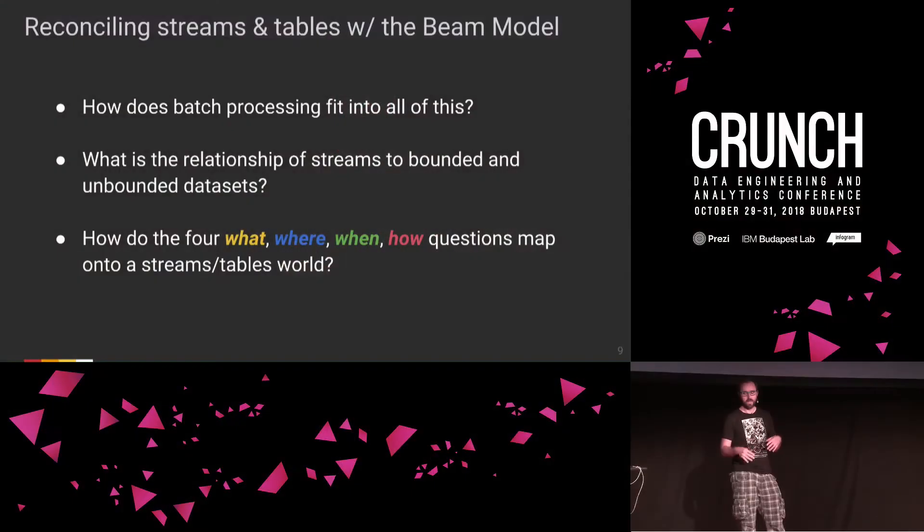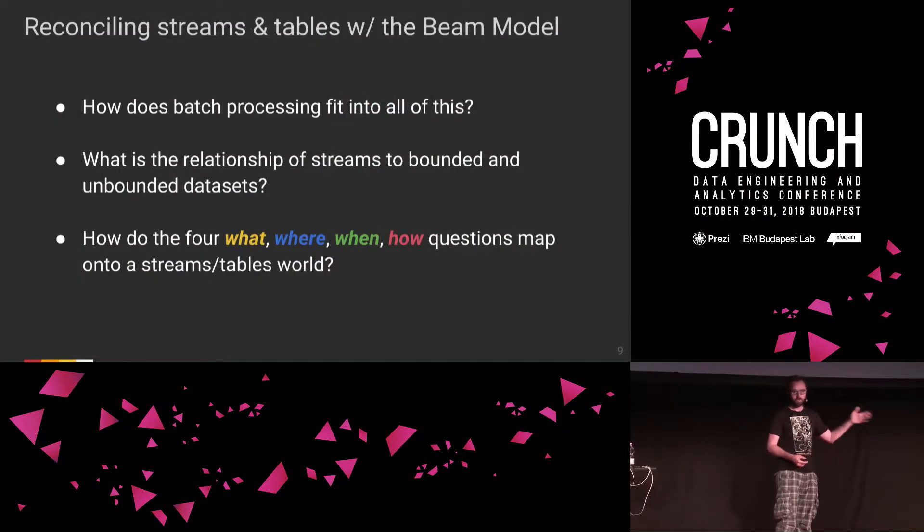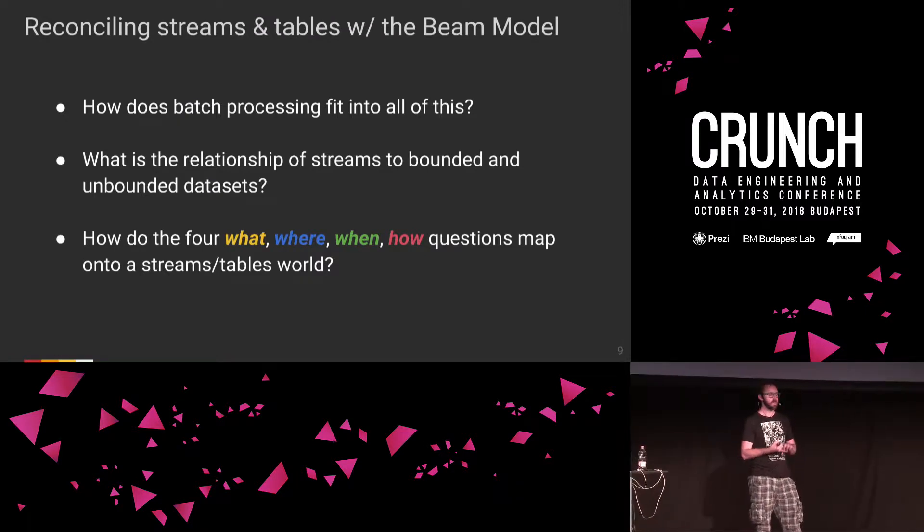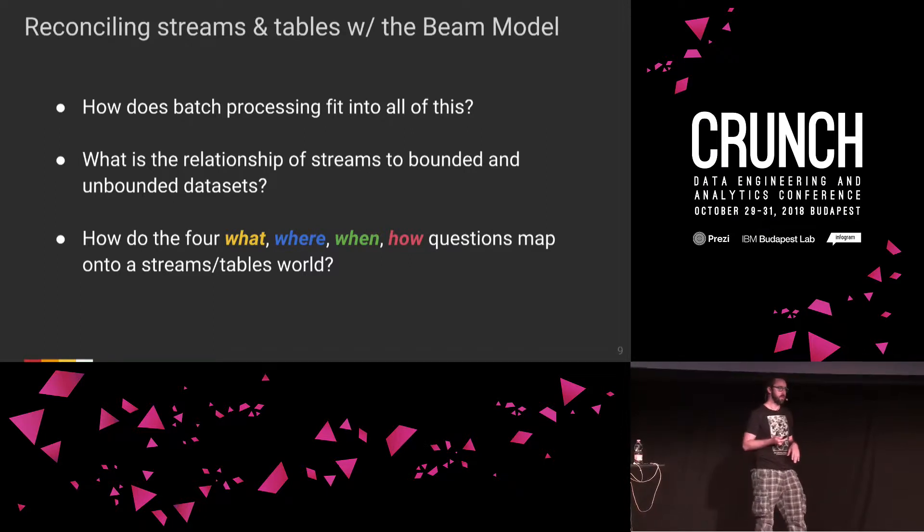To reconcile what streams and tables mean in the way Beam approaches data processing, there are three main questions: How does batch processing fit into all of this, since Beam supports both batch and stream processing? What is the relationship of streams to bounded and unbounded data sets? And how do the four Beam questions map onto a streams and tables world? We'll answer the first two within the framework of MapReduce.